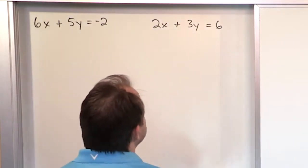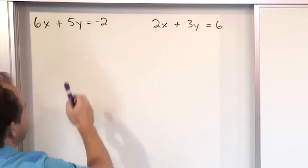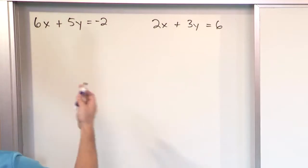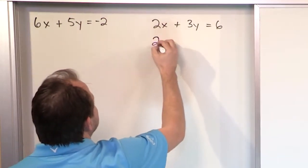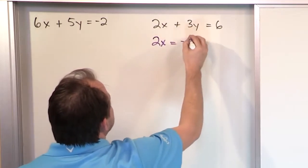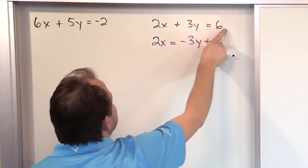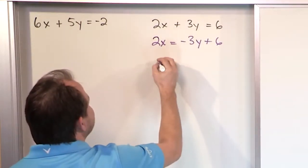And also, in most of the other problems, I've been solving for y, and then putting y in. In this case, I'm not going to do that. I'm going to solve first for x, and I'm going to put it over here, just to show you that it's totally fine to do that. So if we're going to solve for x, this will be 2x is equal to negative 3y plus 6. All I did was subtract 3y from both sides.